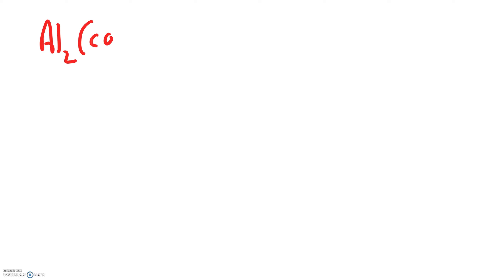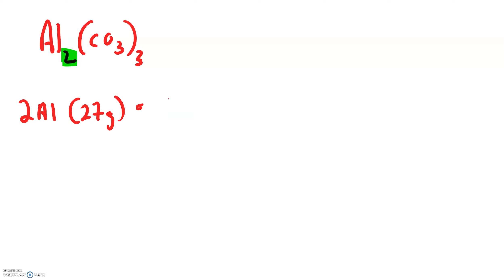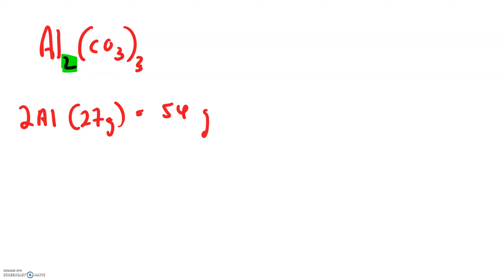What about a bigger one — aluminum carbonate? When doing this, it's a good idea to count up how many of each atom you have. There are a couple of ways to do this. From the subscript we have two aluminums, each 27 grams, so 2 times 27 is 54. You could find the mass of everything in the carbonate and multiply by 3, or you could say that three carbonates gives us three carbons and nine oxygens — you'll get the same answer either way.